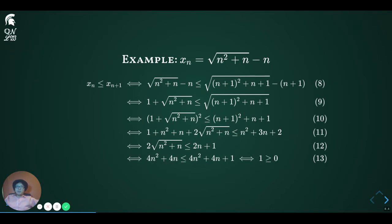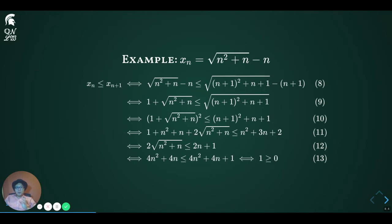For a bit of algebra practice, let's look at the sequence which is the square root of n squared plus n, minus n. This sequence turns out to be increasing. To prove this algebraically, we need to show that the square root of n squared plus n minus n is greater than or equal to the square root of (n+1) squared plus (n+1), minus the quantity (n+1). Instead of reading out the rest of the computation, I will just pause here for a bit and let you read through the algebra. You can always check out the slides without watching through the entire video — a link to the slides is available on the course D2L site.